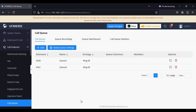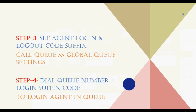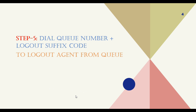Now that we have created the global queue settings, step four is to dial the queue number plus the login suffix code to login an agent to the queue, and step five is to dial the queue number plus the logout suffix code to logout an agent from the queue.